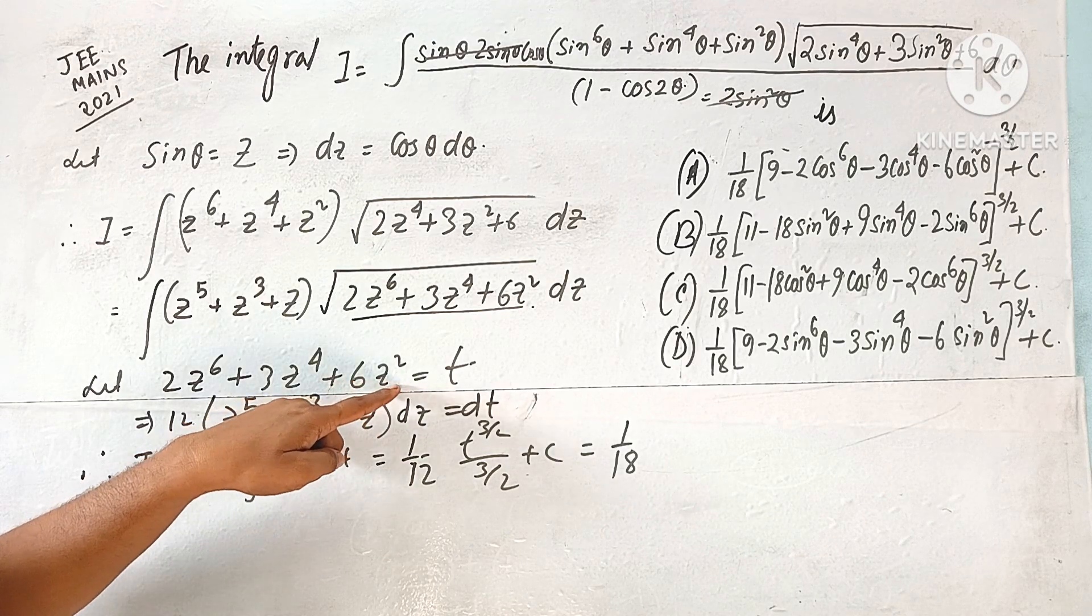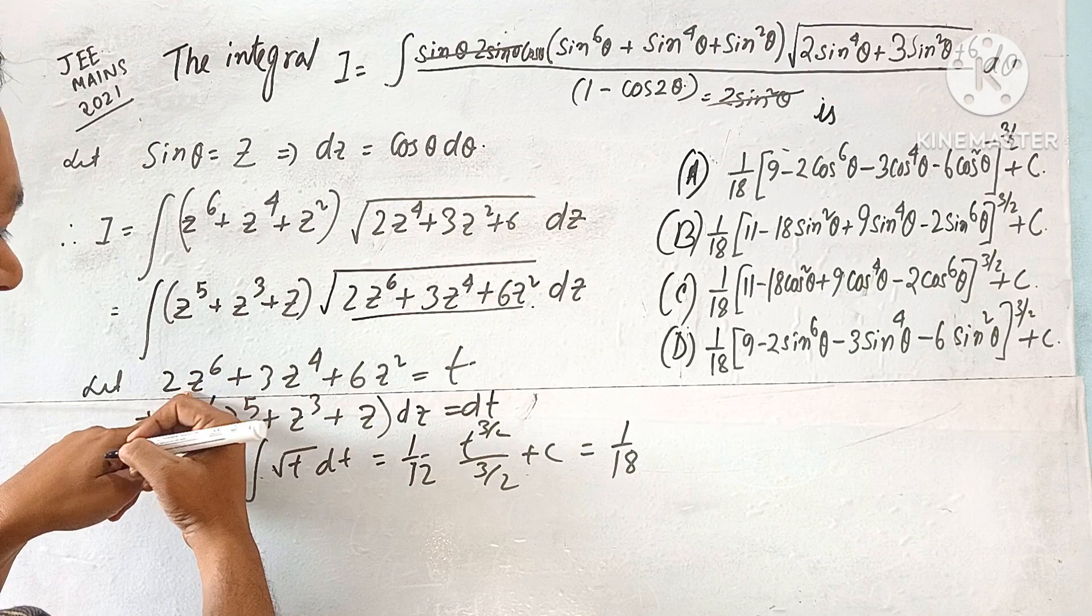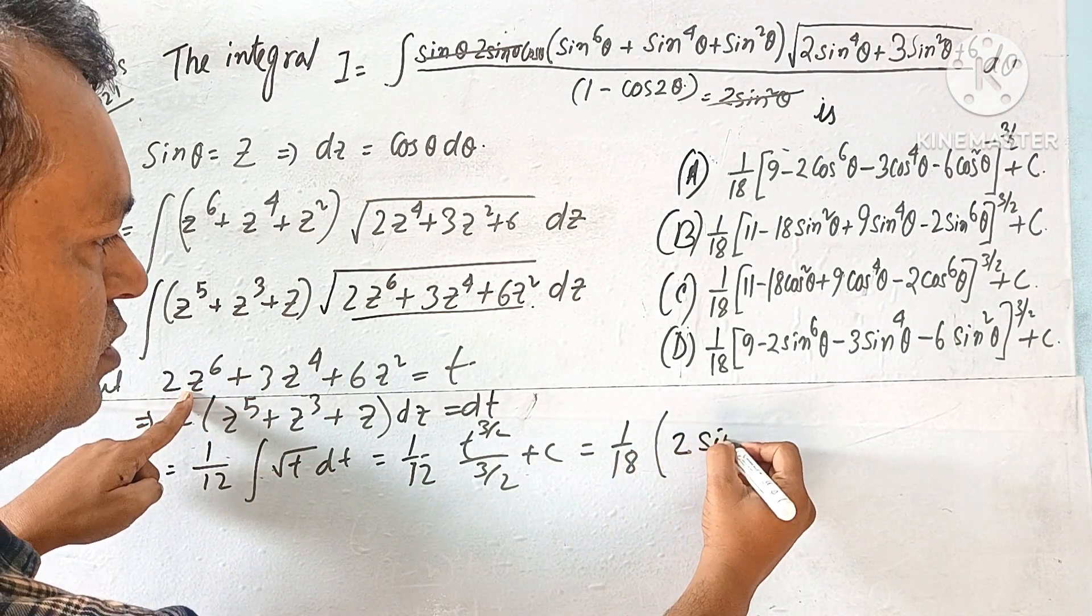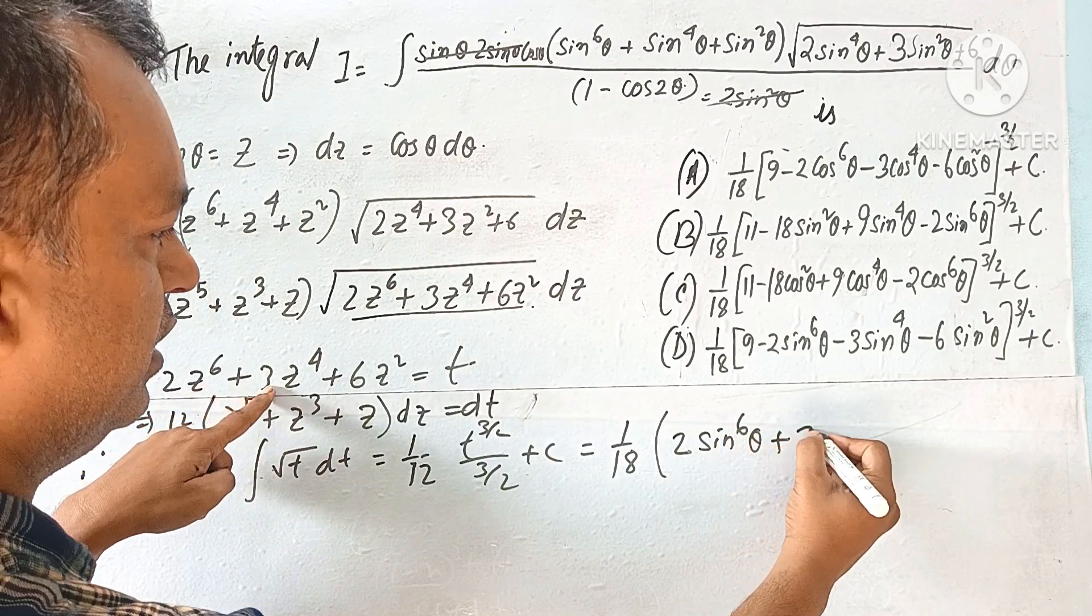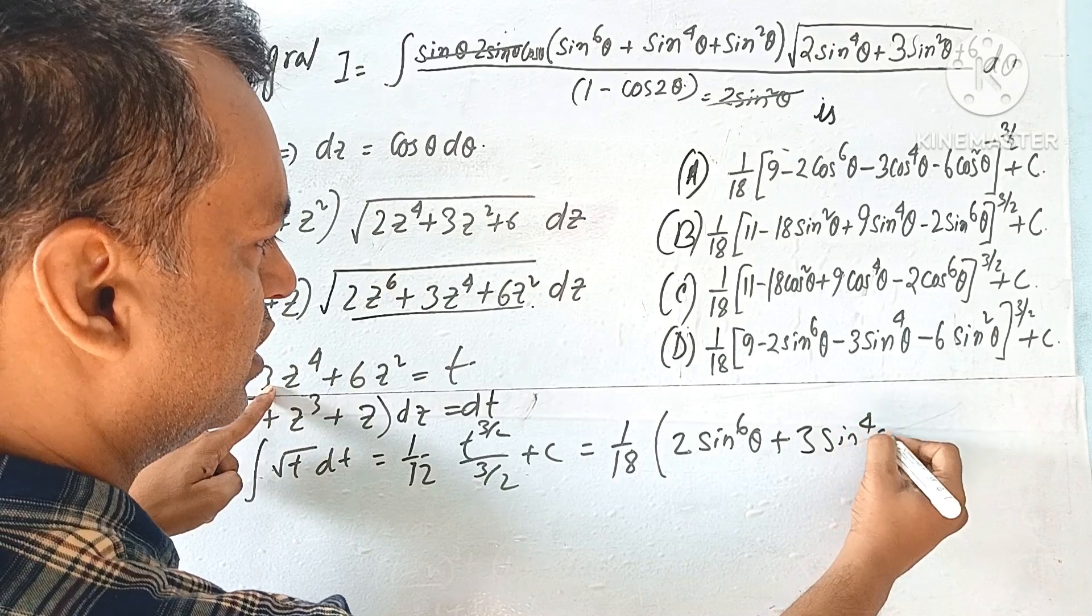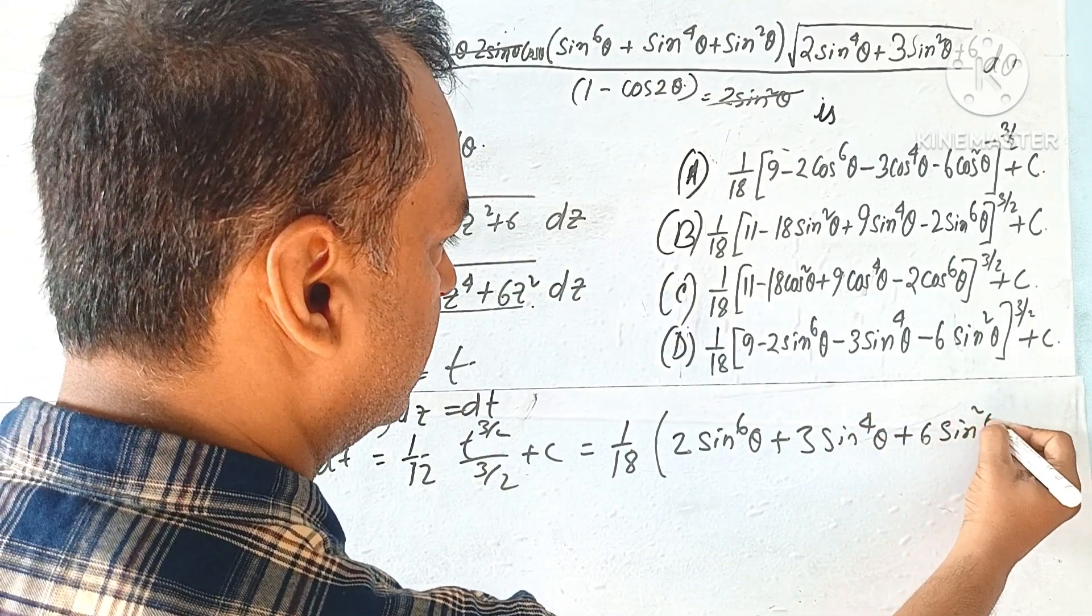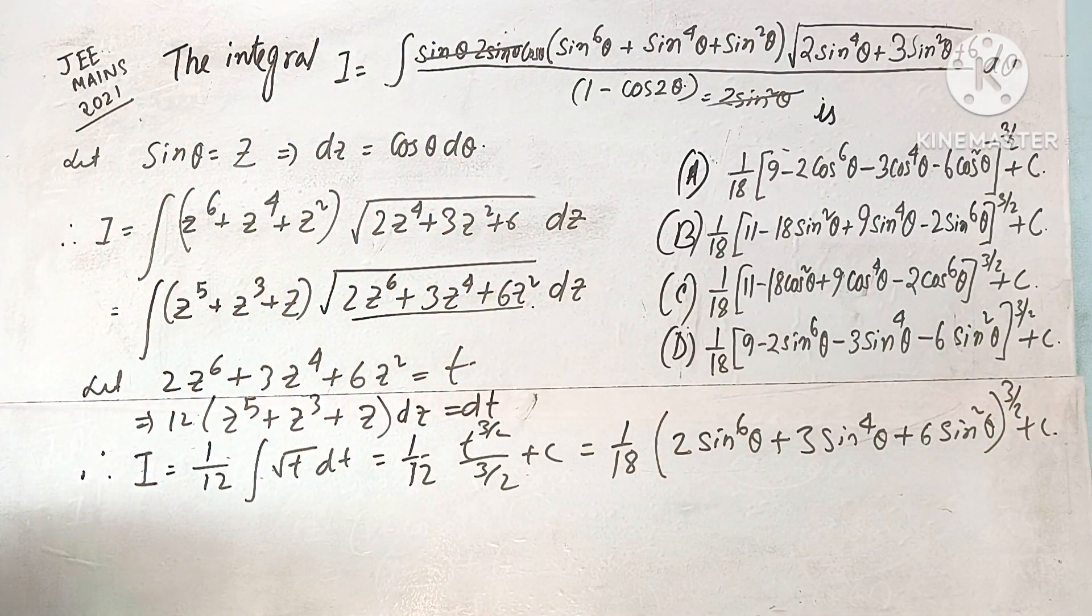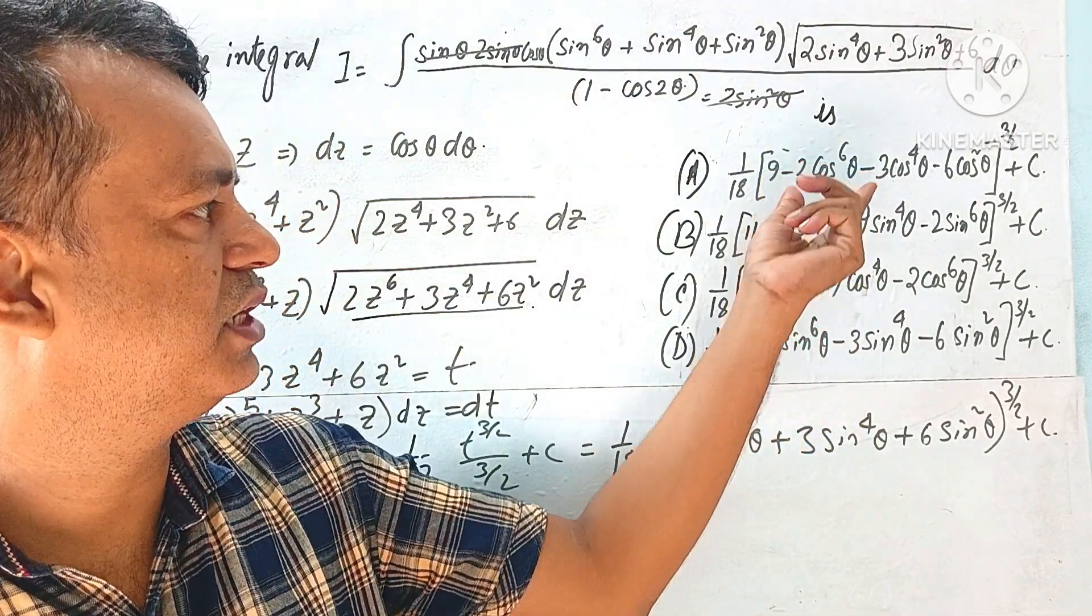t means this and z means sin θ. So here z means sin t, t to sin to the power 6 t, 3 sin to the power 4 t, 6 sin square t θ, power 3 by 2 plus c.